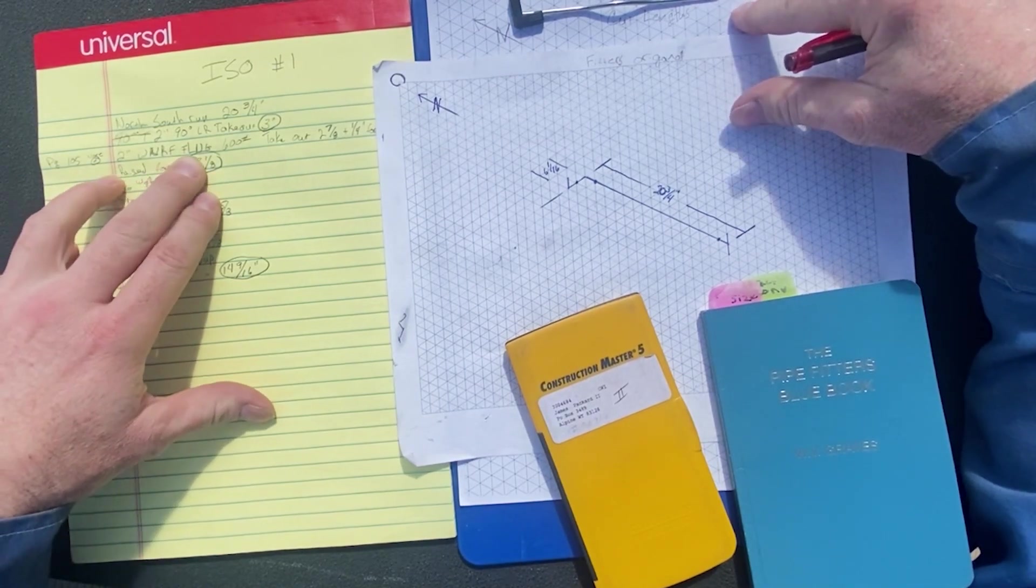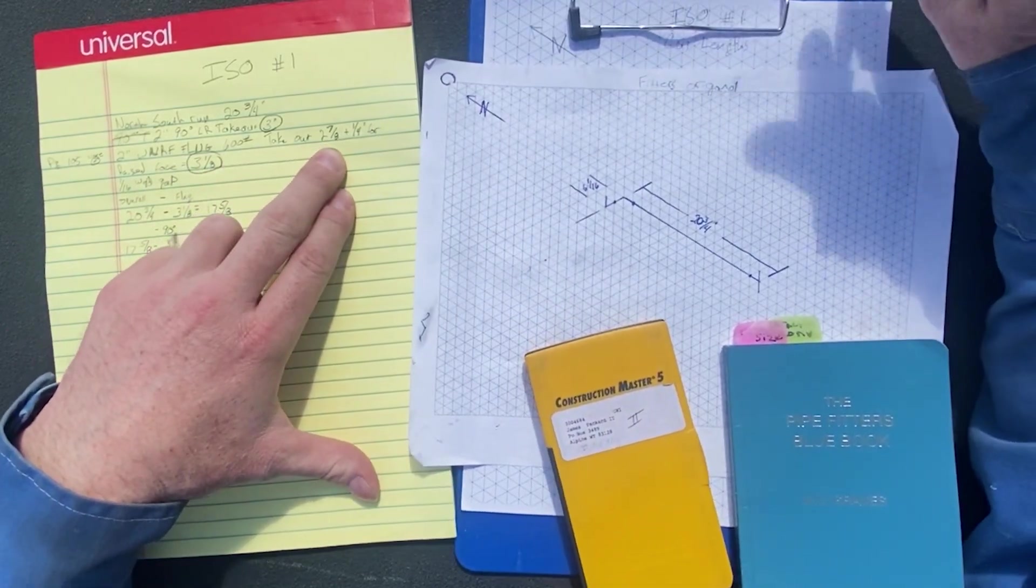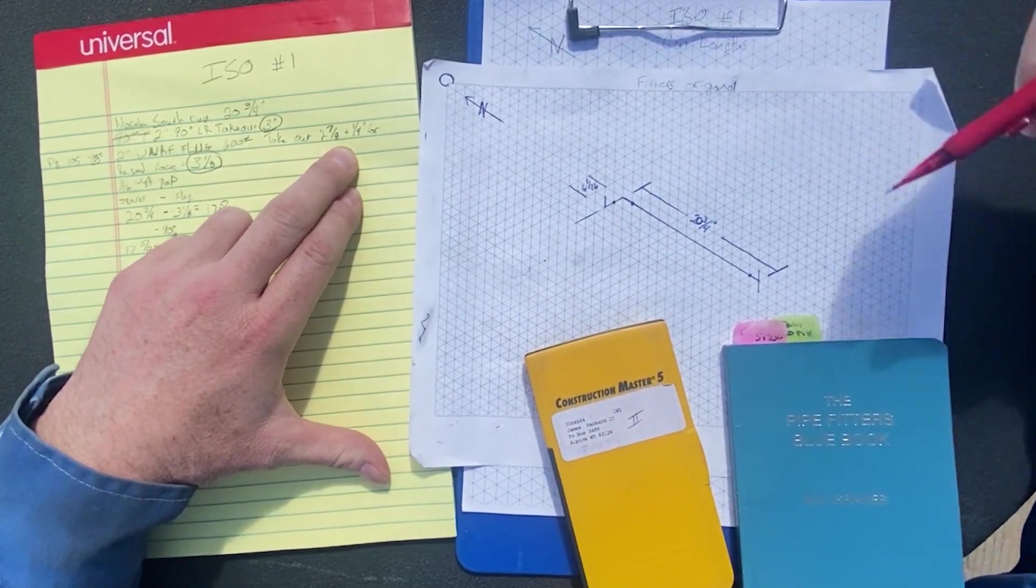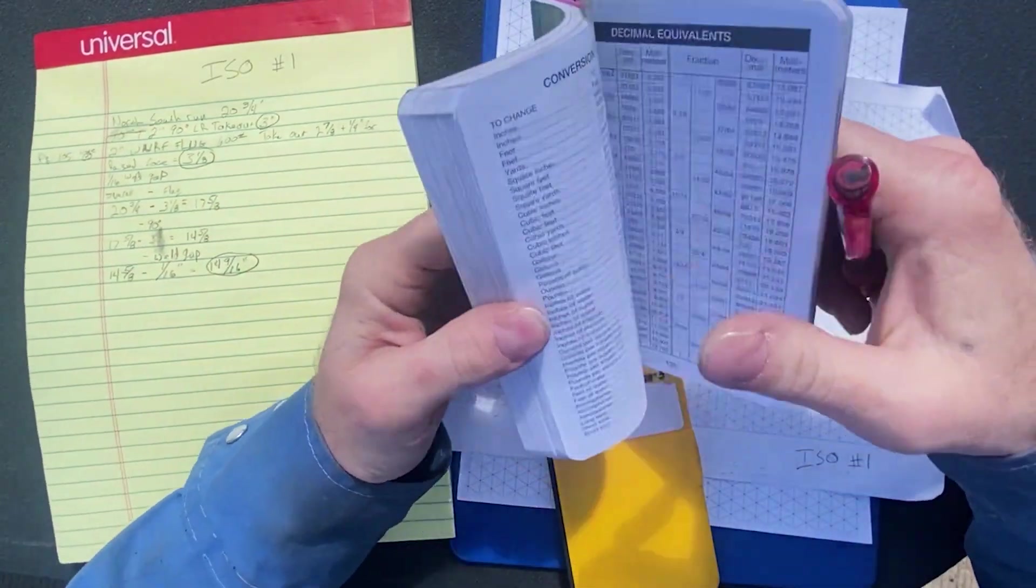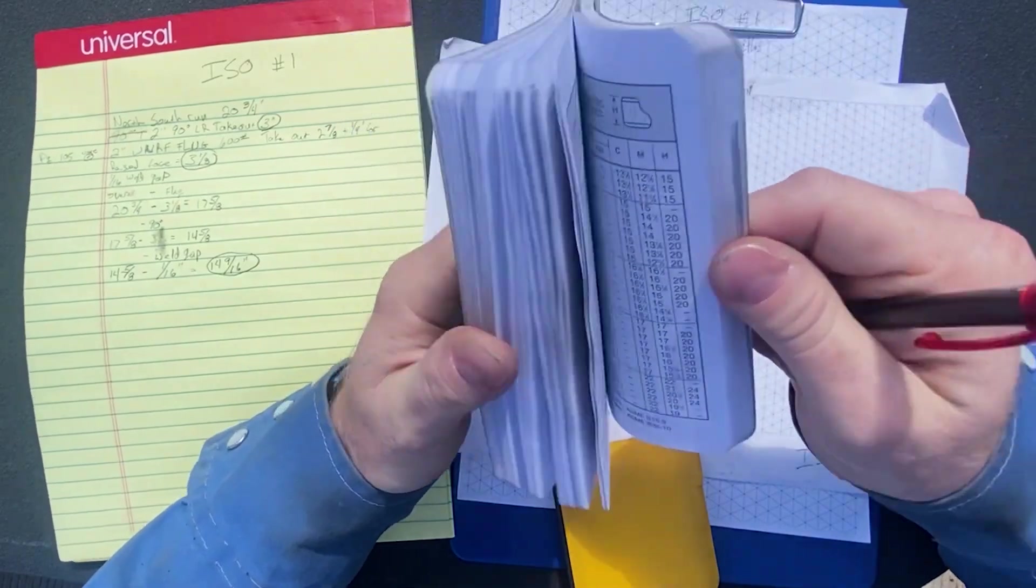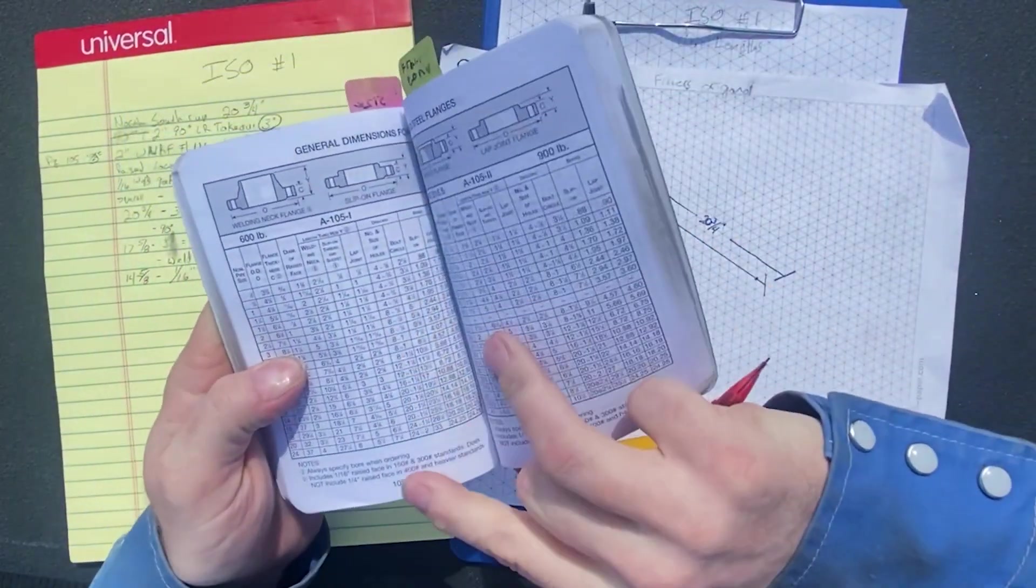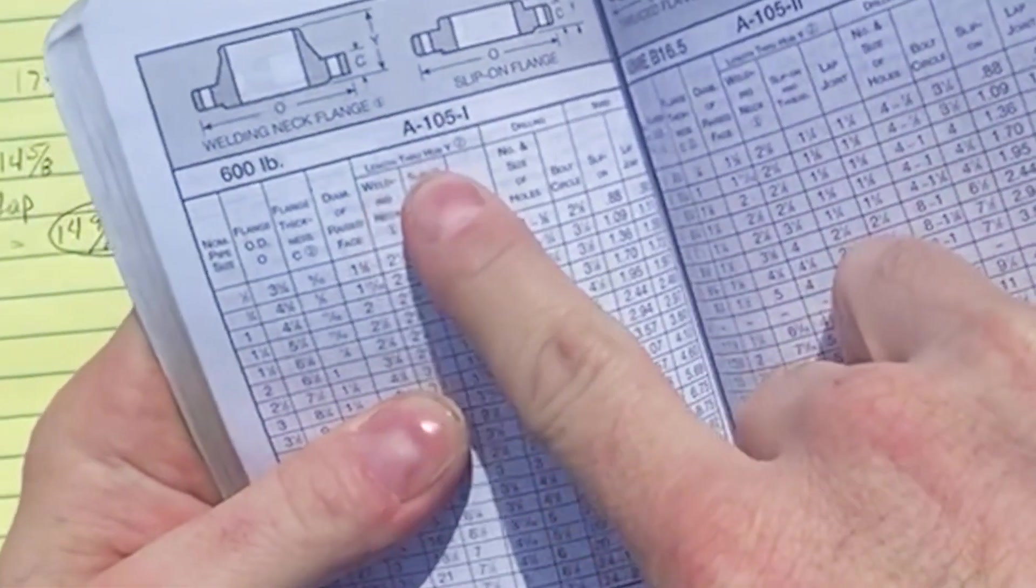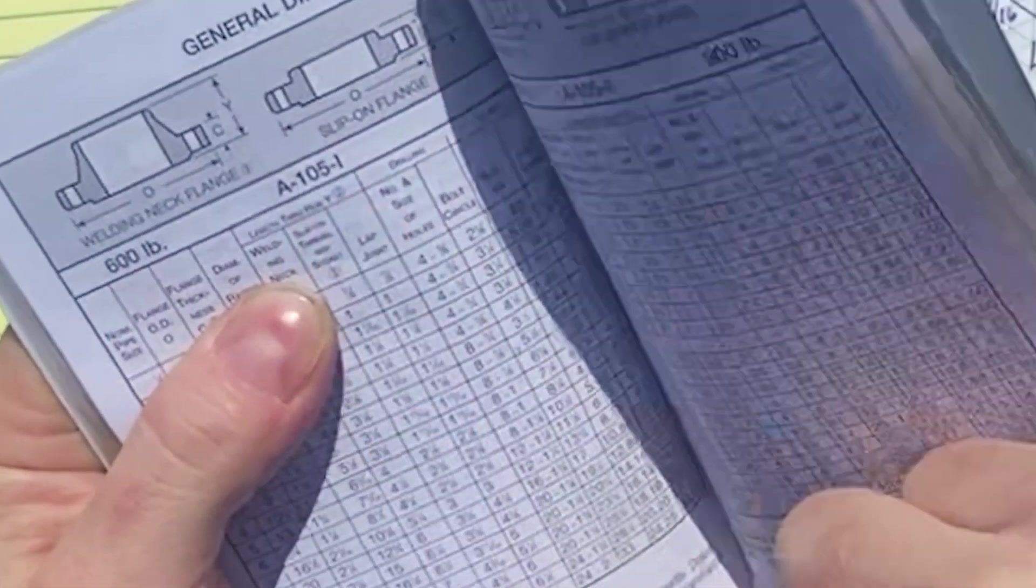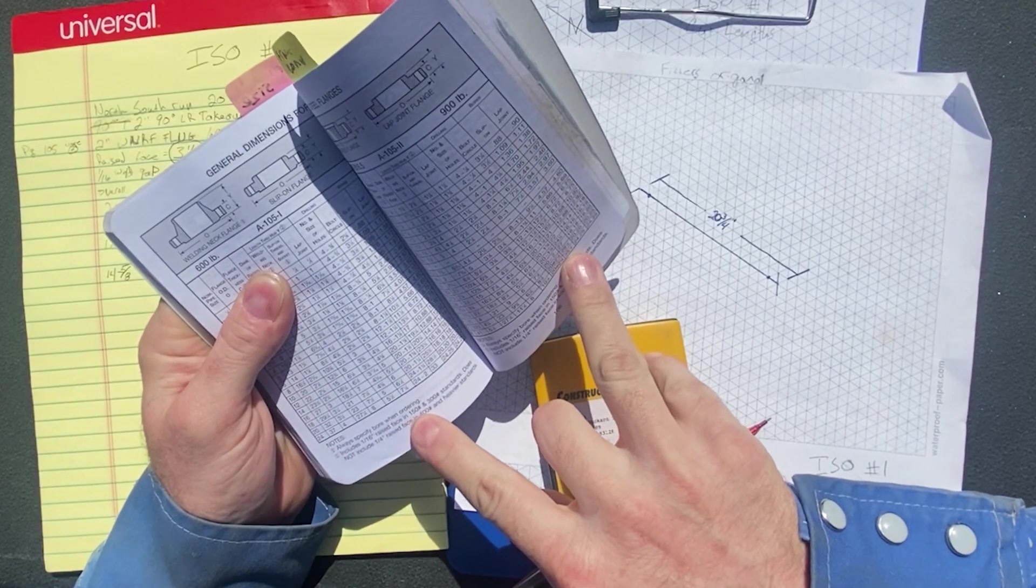Two inch raised face weld neck flange, 600 pound. Takeout on that is two and seven eighths in the blue book. If you look at note, I think number three, I'll go to page 105 and I'll show you where this can get a little tricky. So page 105, length through hub Y, that was note number two. That includes a sixteenth of an inch raised face in 150 pound and 300 pound standards.